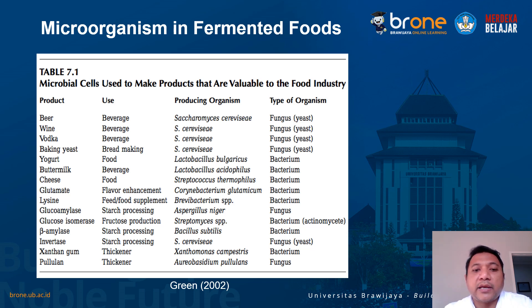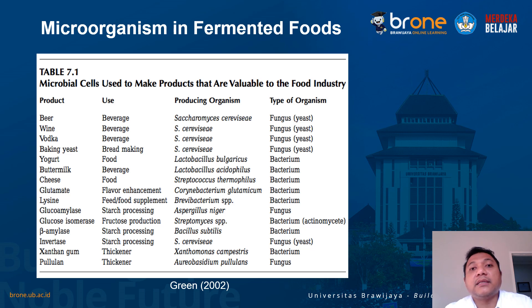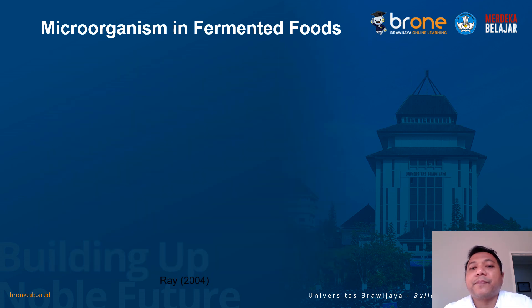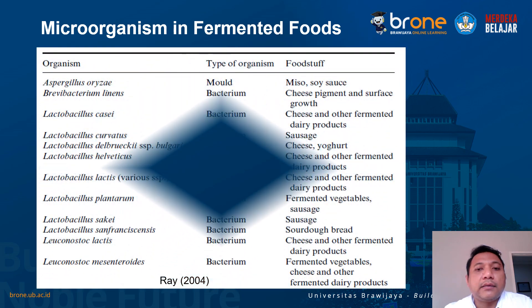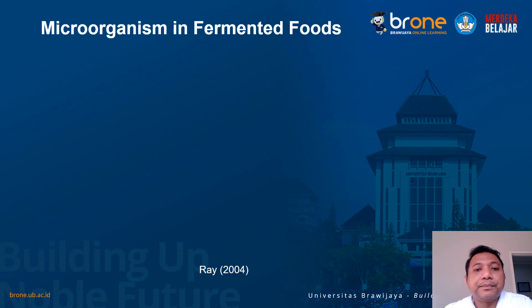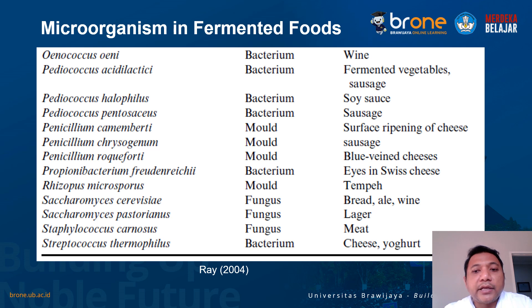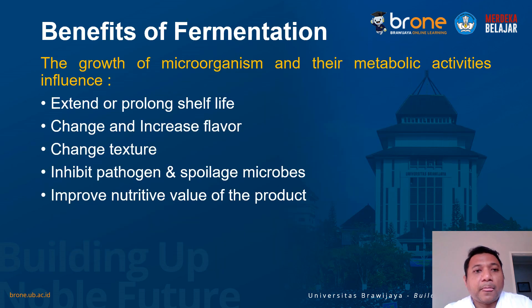Misalkan enzim dari mikroorganisme yang kita gunakan untuk produksi fruktosa — fruktosa itu sejenis gula. Kalau kita mau buat gula fruktosa, kita bisa gunakan glukosa isomerase, penghasilnya adalah kelompok bakteri Streptomyces. Ini contoh-contoh yang lain — misalkan keju swiss itu bisa berlubang, ada matanya, karena aktivitas Propionibacterium dan seterusnya.